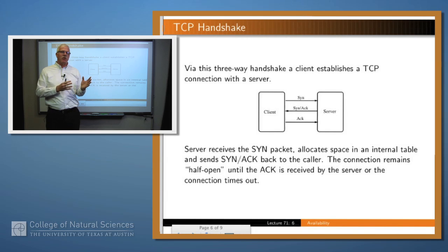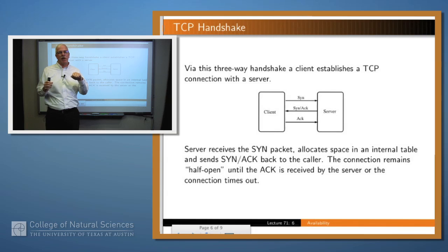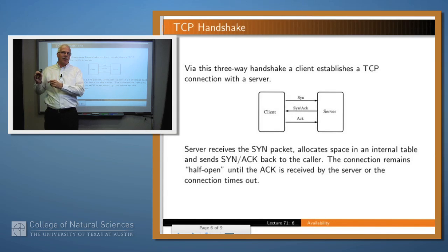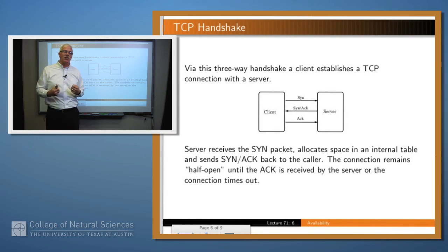When you want to establish a connection between a server and a client on the Internet, the client sends a message to the server called a SYN message, because there's a particular flag in the TCP packet called the synchronization flag which is set. What happens then is that the server says this client wants to talk to it — it fills in a bunch of information in an internal table, and this is called a half-open connection. Then it sends back to the client a packet called a SYN-ACK packet, because it has both the synchronized and the acknowledgment flags set, and then it sits and waits.